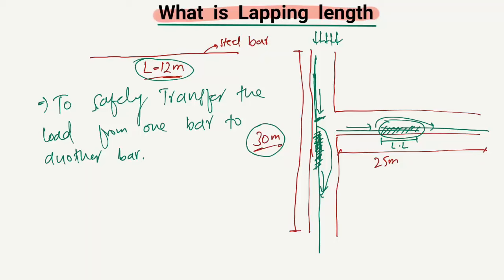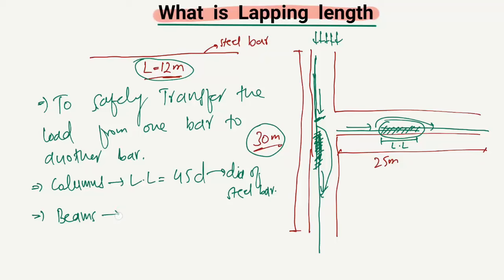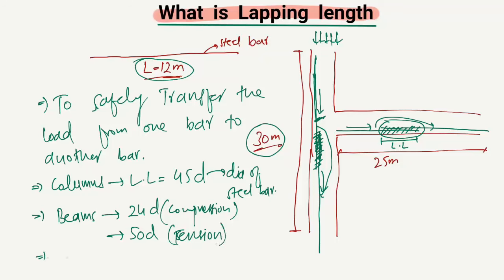This lapping length depends on the structural member. For columns, the lapping length is equal to 45D, where D is the diameter of the steel bar. For beams, this value is 24D when there is compression in the steel bar. When there is tension, you have to provide 50D for the tension zone.